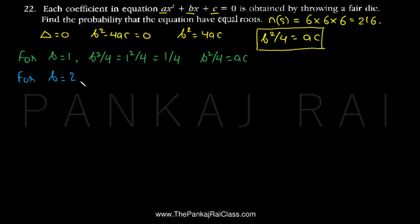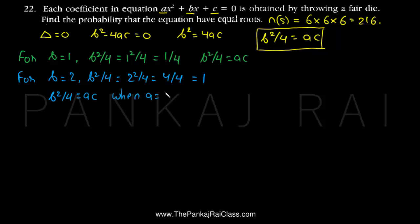For b = 2, b²/4 = 4/4 = 1. We need ac = 1, and this is satisfied when a = 1 and c = 1. At that point ac = 1, so b²/4 = ac. This gives us one favorable combination. There are no other values of a and c for which this holds.